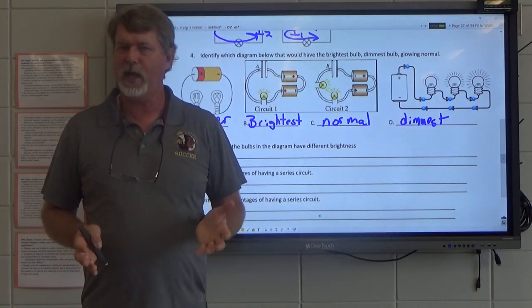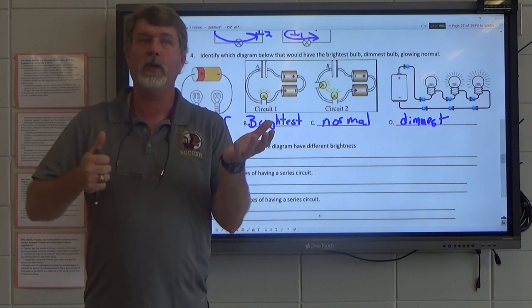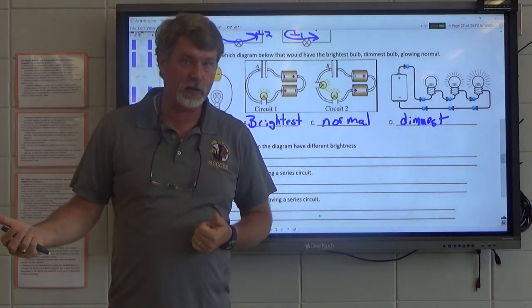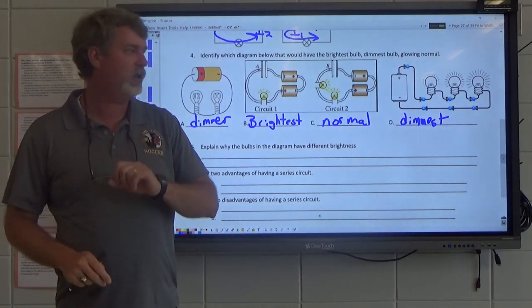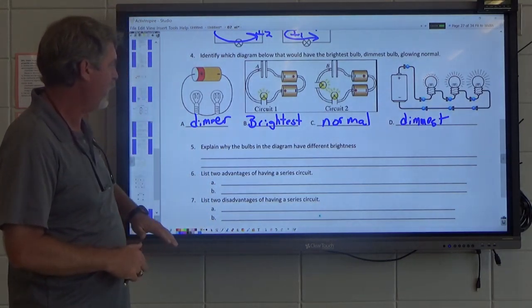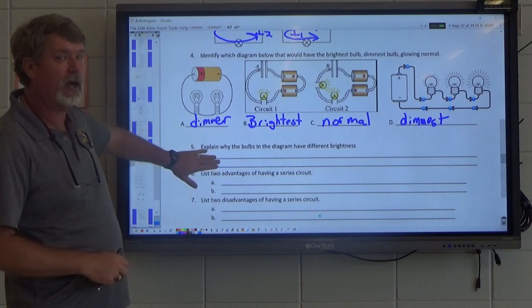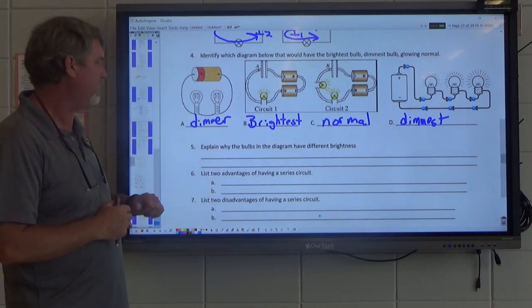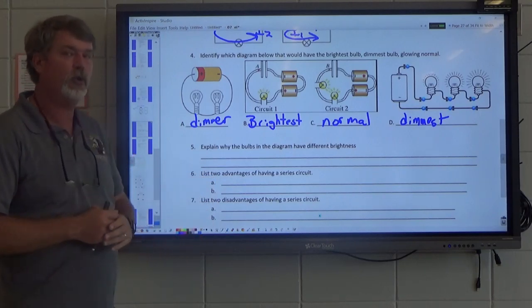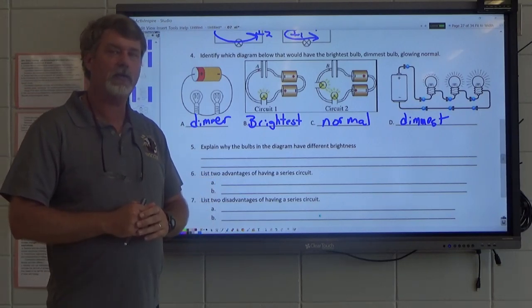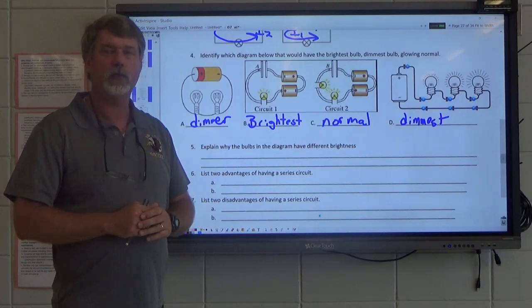So brightest, normal, dimmer, and then finally the dimmest. In a series circuit, as you add batteries, the voltage goes up. But as you add resistors, the current would go down only in a series, not a parallel. So explain why they have different brightness. I just reviewed that. You can answer that question. List two advantages and disadvantages. We'll post those questions and you can respond through our online activity.